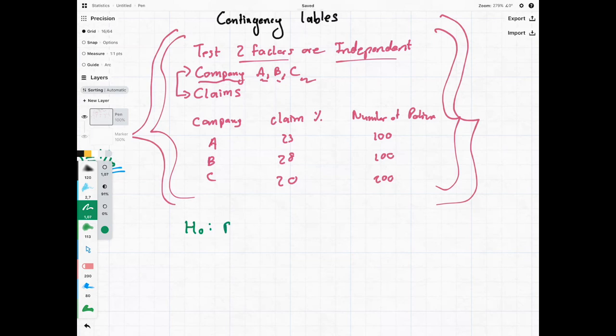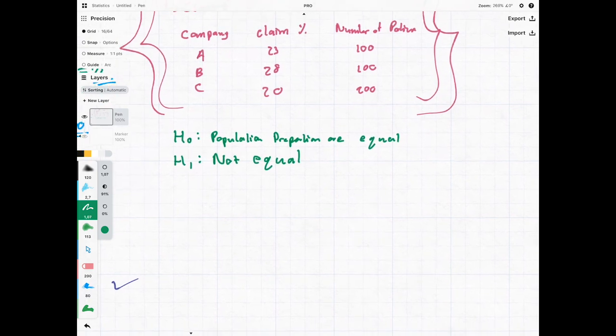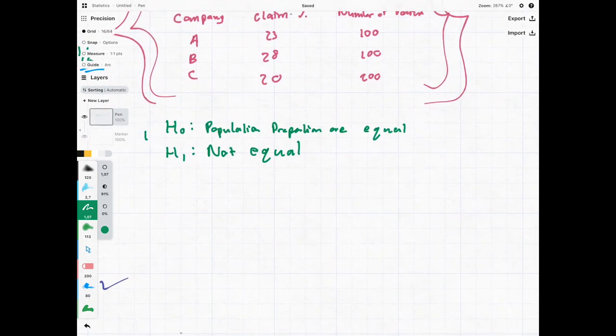The null hypothesis is that the population proportions are equal. The reason for that is if these three different population proportions are equal then it's very likely that the two factors are independent and that the company doesn't have any effect on claims. The alternative hypothesis is therefore that the population proportions are not equal. If you're battling with that step, do some practice, get your head around that because if you get that wrong the rest of the question falls apart. If you get that right the rest becomes quite straightforward.